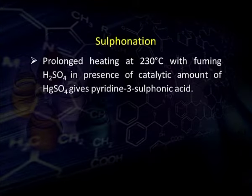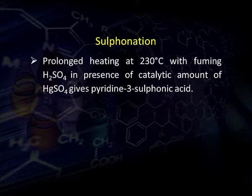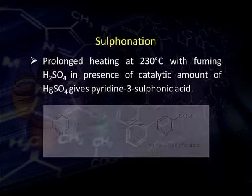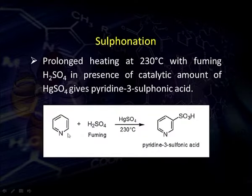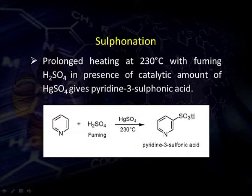For sulfonation: when pyridine is heated for a long time with fuming sulphuric acid in the presence of a catalyst — generally mercuric sulphate — it gives pyridine-3-sulfonic acid. The SO3H group gets attached at the third position.